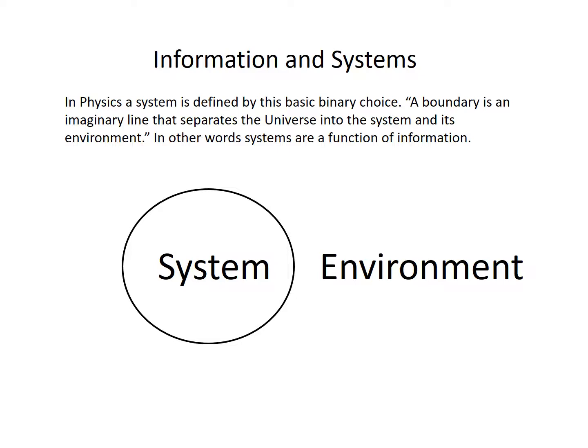Information and systems. In physics, a system is defined by this basic binary choice. A boundary is an imaginary line that separates the universe into the system and its environment. In other words, systems are a function of information.